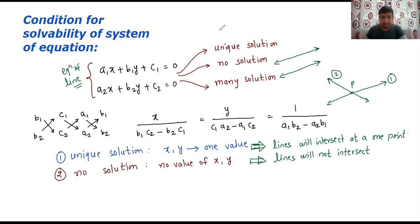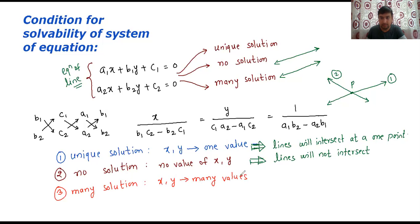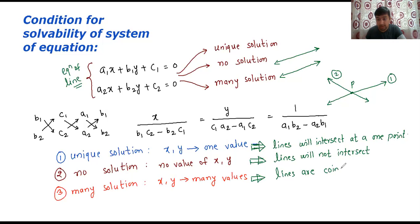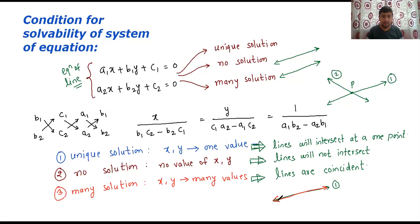Third — suppose your system of linear equations has many solutions. Many solutions means there are a number of values of x and y. Now, what is the geometrical meaning of this? The geometrical meaning is that your lines are coincident. Coincident means — suppose this is one line, the second line will be on the same. It's coincident. That means there are many values of x and y.